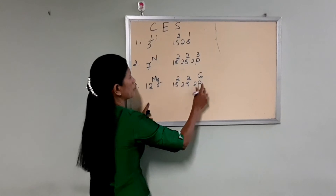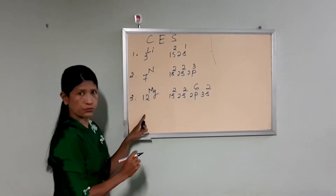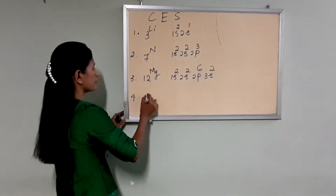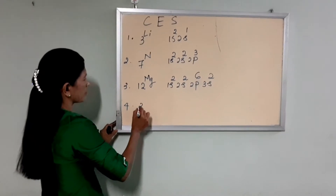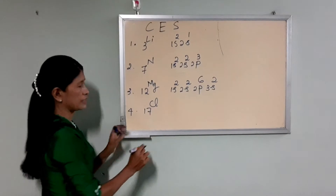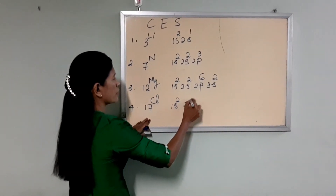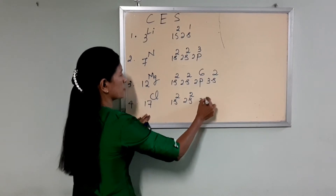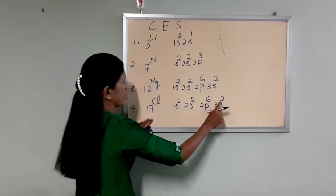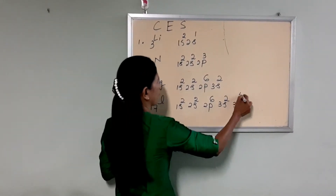Then 3s, 1s, two, three s, two. Now number four — number four is the second period. One s two, three s, two, two p, four. Then 3s, four, 3b, 4b.